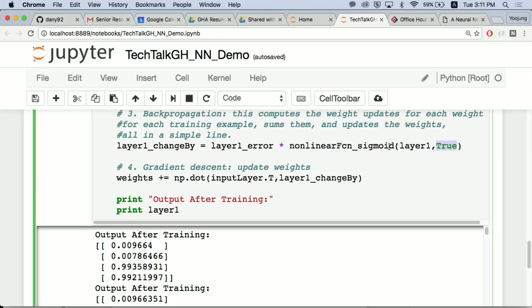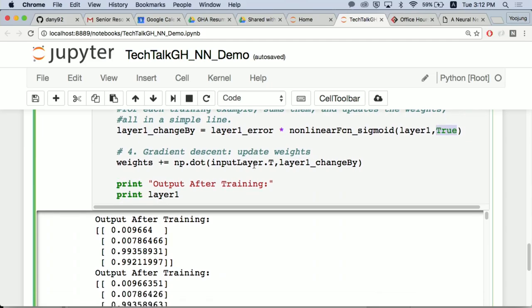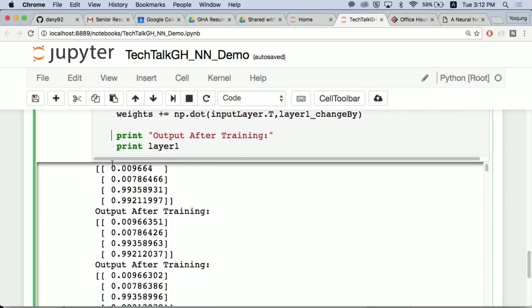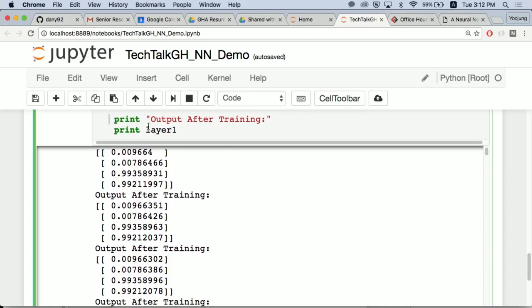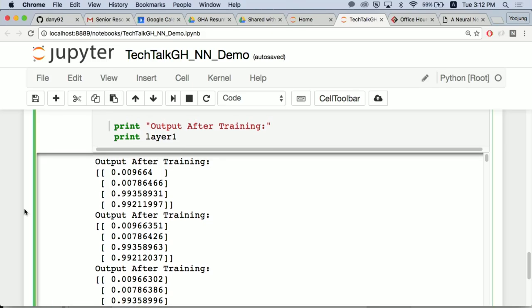Step three is going to do a backpropagation and compute the weight updates. Compute the derivatives, which is why this second parameter, if you remember, was the derivative and it's set to true. So we're going to compute the derivative for this.